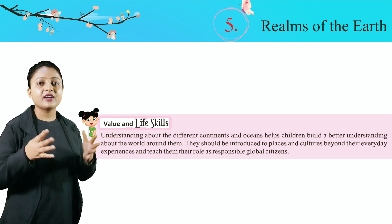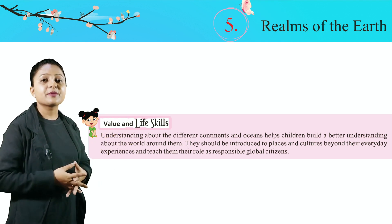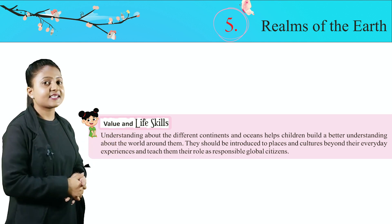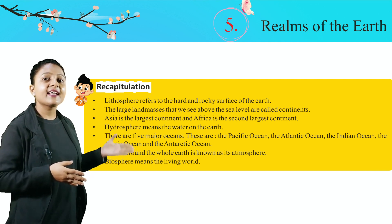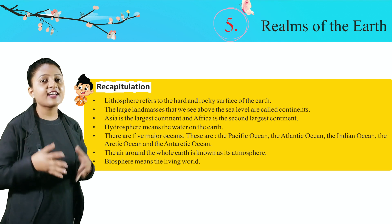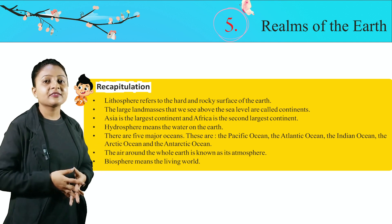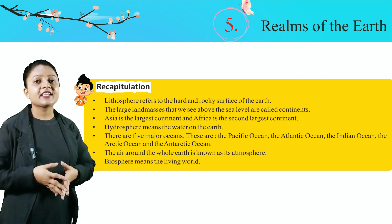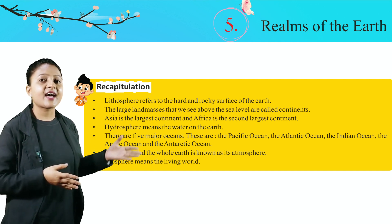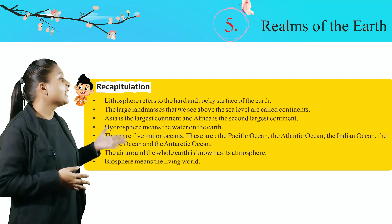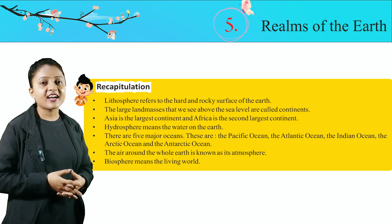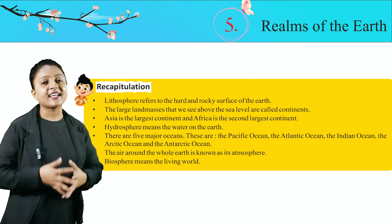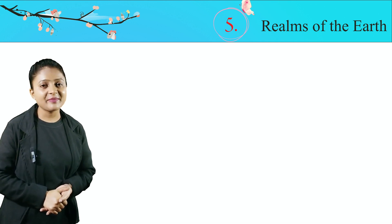Recapitulation: The lithosphere refers to the land and rocky surface of the earth. The large land masses that we see above the sea level are called continents. Asia is the largest continent and Africa is the second largest continent. Hydrosphere means the water on the earth. There are five major oceans: the Pacific Ocean, the Atlantic Ocean, the Indian Ocean, the Arctic Ocean, and the Antarctic Ocean. The air around the whole earth is known as its atmosphere. Biosphere means the living world. Thank you class, we shall meet again in the next chapter.